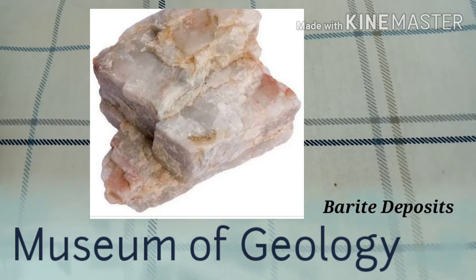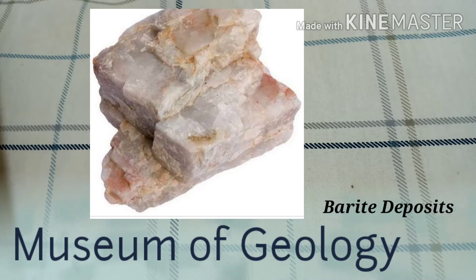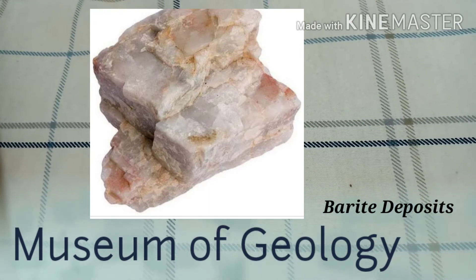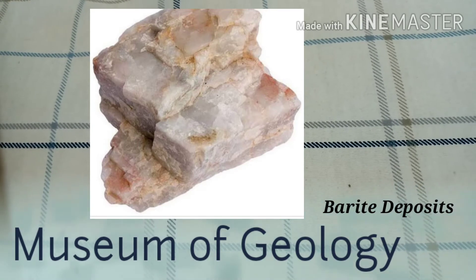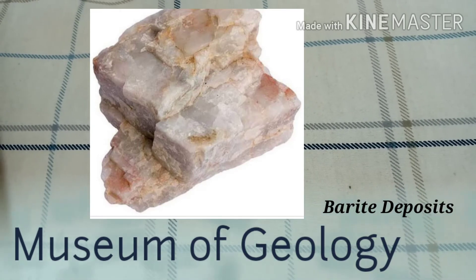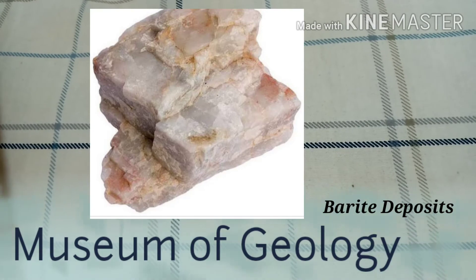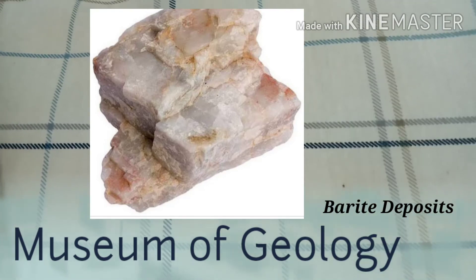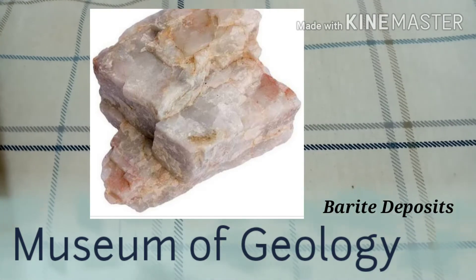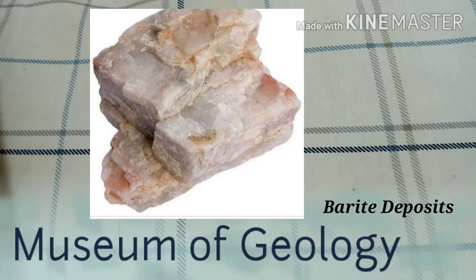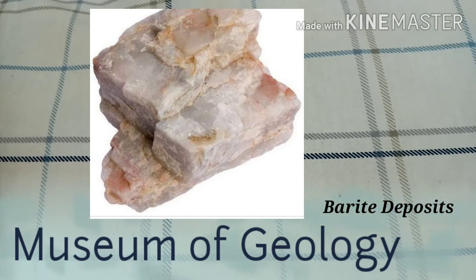Now I will discuss the global deposits of barite. Pakistan produces 50,000 metric tons, out of which about 3,000 tons are produced from the Las Bela and Khuzdar districts in Balochistan province. Barite is also found in various regions of the United States including New Mexico, Georgia, Nevada, North Carolina, and Virginia.